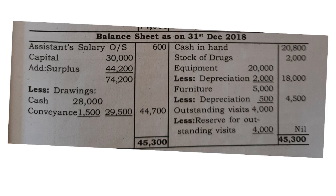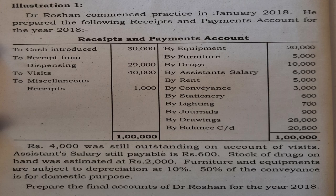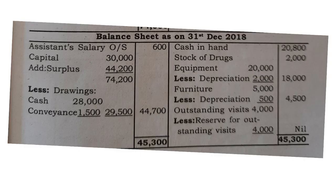For the balance sheet: Capital introduced 30,000, add surplus from income and expenditure account 44,200 equals 74,200. Less drawings: cash drawings 28,000 plus conveyance (domestic use) 1,500 equals total drawings 29,500. Net capital 74,200 less 29,500 equals 44,700. Assets side: cash in hand 20,800, closing stock of drugs 2,000, equipment 20,000 less depreciation 2,000 equals 18,000, furniture 5,000 less depreciation 500 equals 4,500, outstanding visits 4,000 less reserve for outstanding visits 4,000 equals nil. Total assets approximately 45,300 rupees.